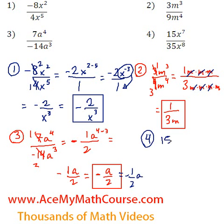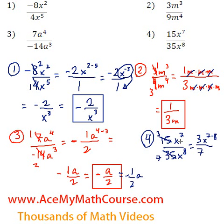How about question 4? 15x to the 7 over 35x to the 8. So 15 over 35 — I can divide top and bottom by 5: 15 divided by 5 is 3, and 35 divided by 5 is 7. And then we have x to the power of 7 minus 8, because since we're dividing we can just subtract the exponents. 7 minus 8 gives a negative exponent, so I can just send the x down to the denominator. And we have 3 over 7x.